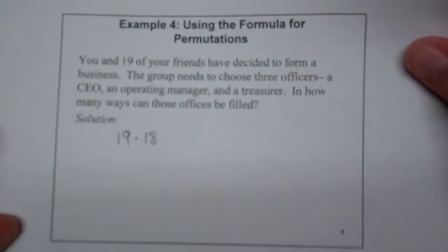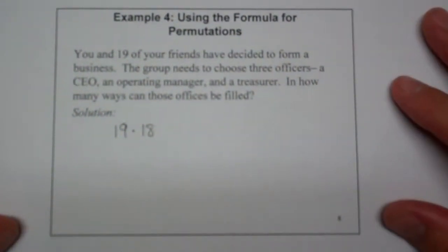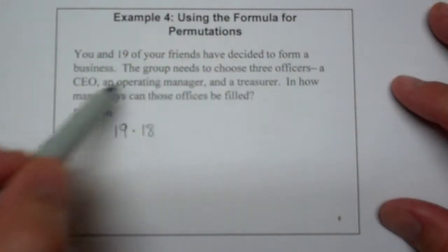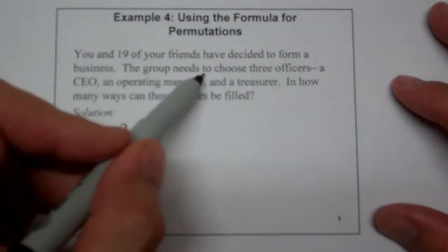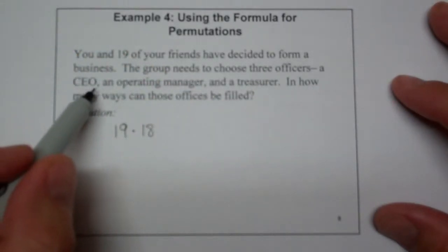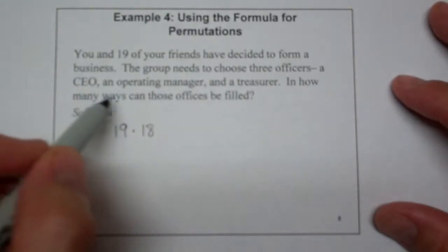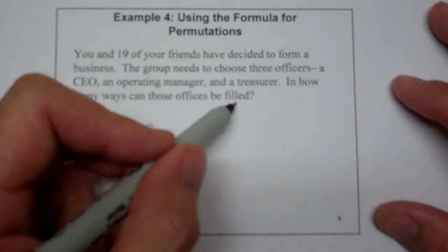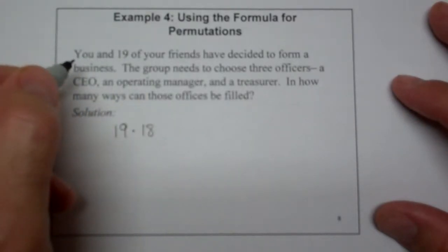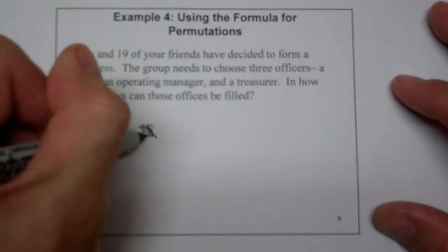So let's use example number 4. And the idea here is you and 19 of your friends have decided to form a business. The group needs to choose 3 officers, a CEO, an operating manager, and a treasurer. And how many ways can those offices be filled? Well, assuming that you're not going to be part of this. Well, you are, right? So let's go ahead and do this.